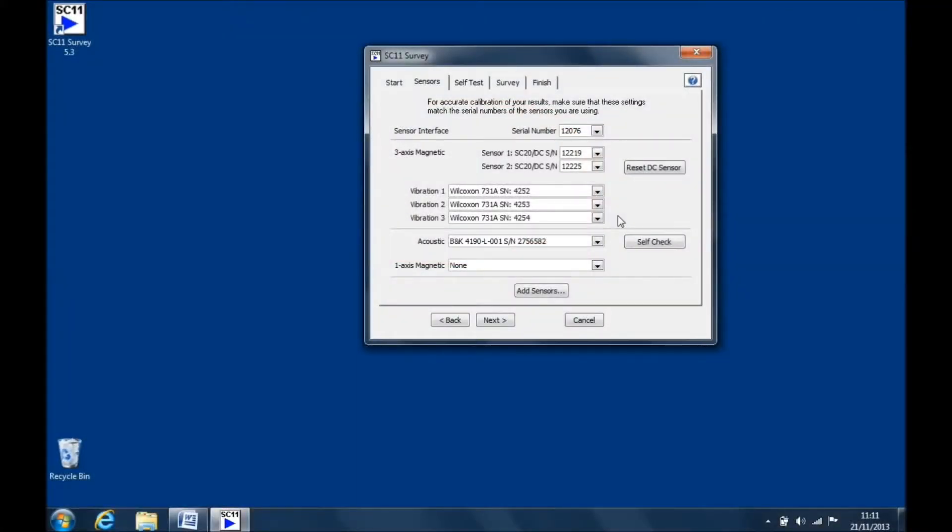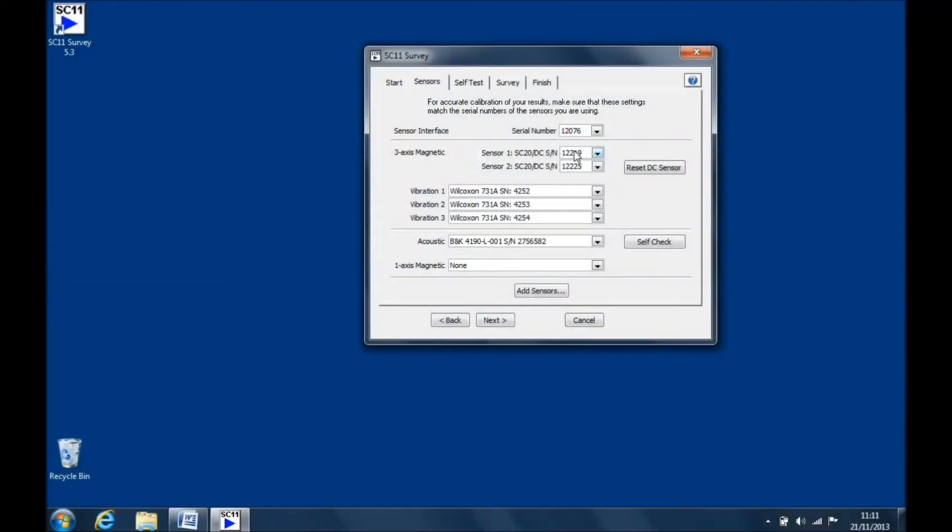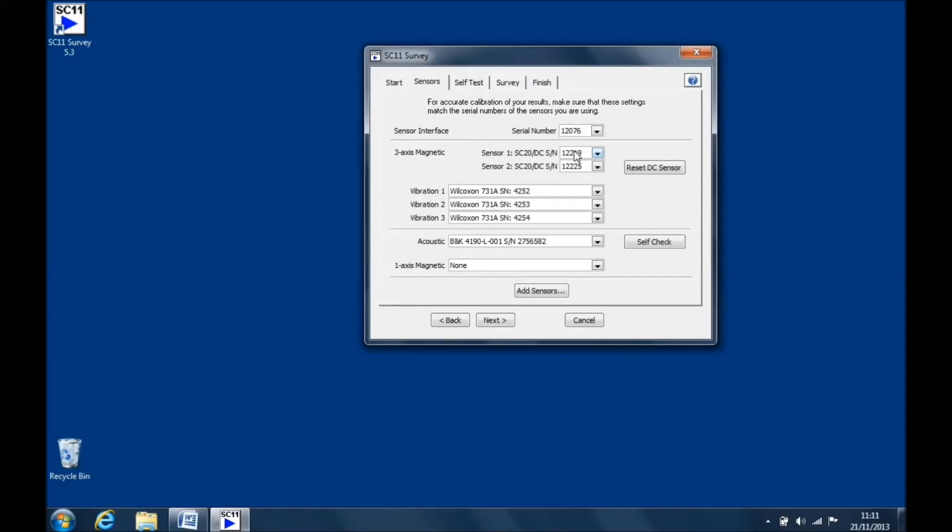Make sure that the serial numbers for the DC sensors are correct. For example, here the DC sensor marked with a white color band is plugged into the MAG1 port. Make sure that the serial numbers for the accelerometers are correct. For example, here the X-axis accelerometer marked with the red spot is plugged into the Vib1 port. And its serial number matches the serial number for the vibration 1 on the program window.